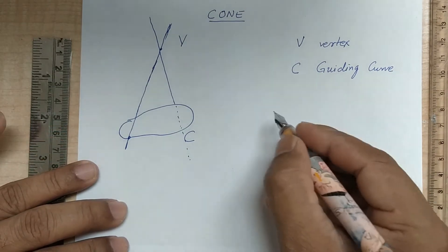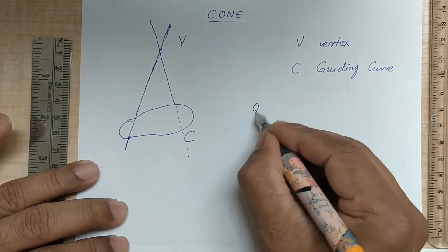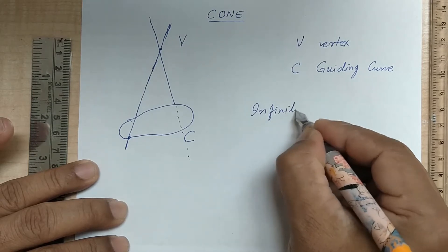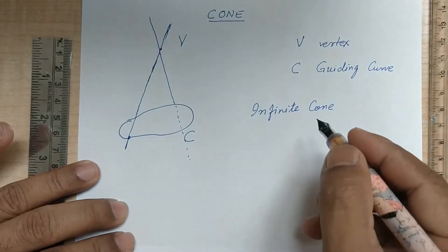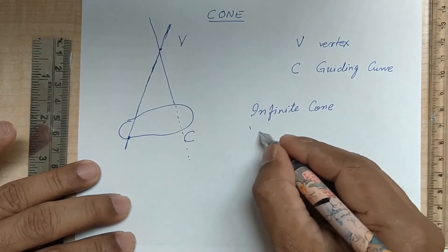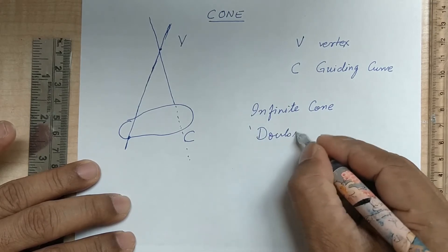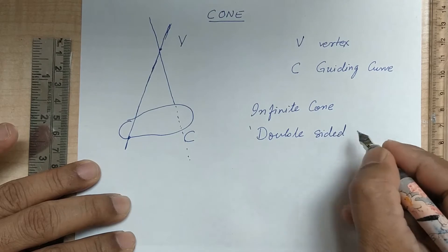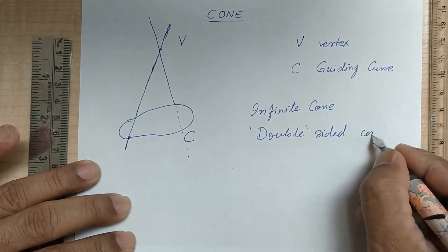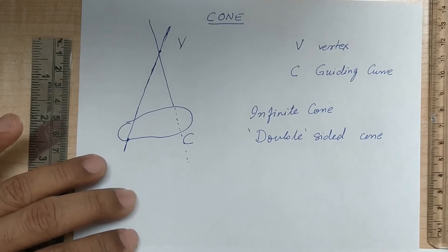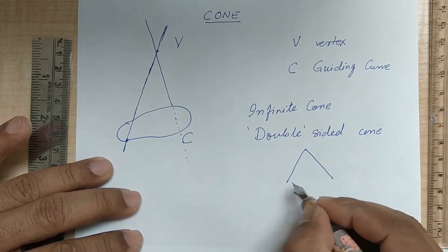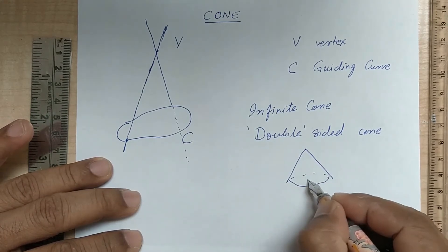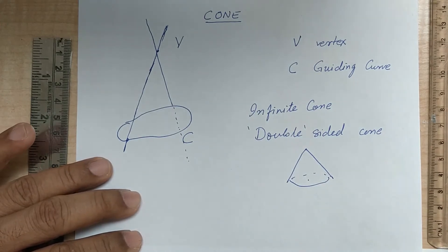Note that this cone is an infinite cone — these lines are infinite in length, and in some sense it is a double-sided cone. From our school education, when we say cone, we normally think of an object which is actually a right-circular cone. We will come to the right-circular cone shortly.